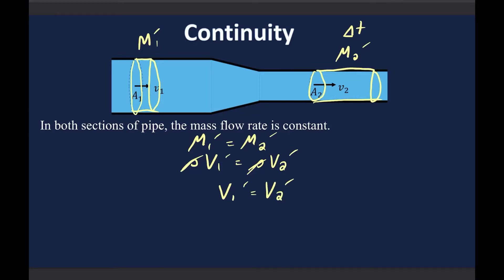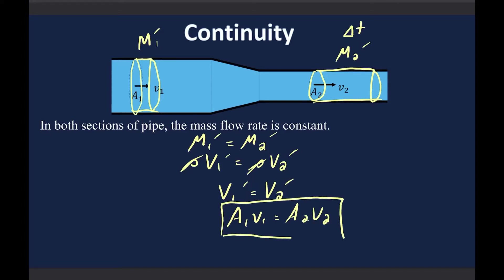We established that the volume flow rate is cross-sectional area times velocity, so A1 V1 equals A2 V2. That equation is called the continuity equation, which says cross-sectional area times velocity is constant in a pipe — and that's because of conservation of mass.